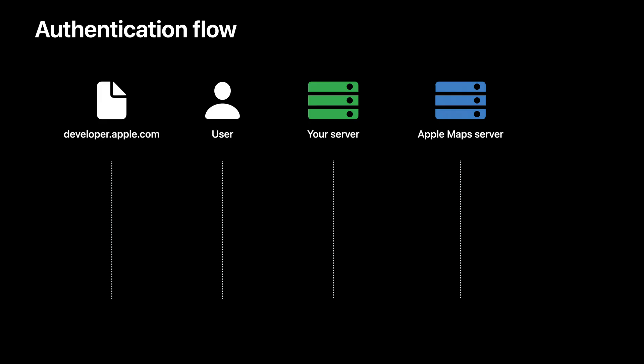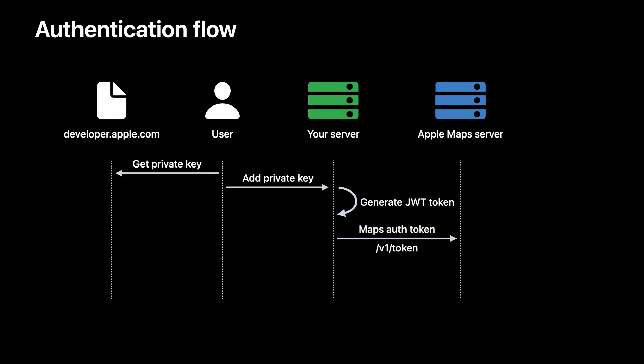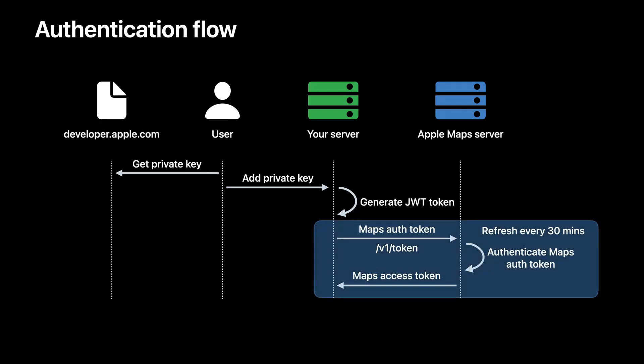One critical piece we haven't talked about is authentication. All the Apple Maps server APIs are authenticated. If you are using MapKit JS, you're already halfway there — Apple Maps server APIs use the same mechanism as MapKit JS to authenticate. First, you will download your private key from your developer account. You will then use this private key to generate a Maps auth token in JWT format — there is detailed documentation about how to generate one linked below. You can exchange this Maps auth token using the token API to get a Maps access token. We'll authenticate the Maps auth token on the backend and send back a Maps access token. This is in JWT format and will be used for all API interactions. This access token needs to be refreshed every 30 minutes by repeating this process.